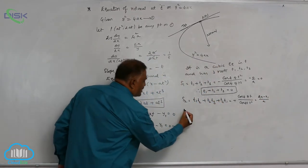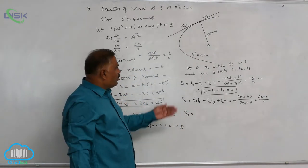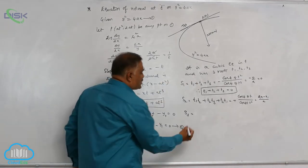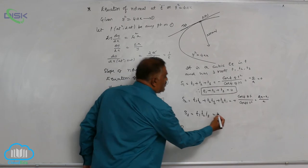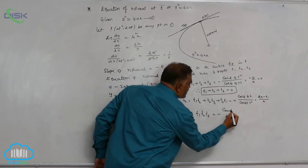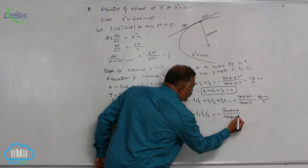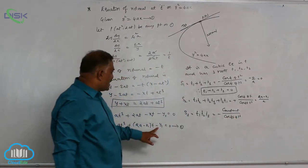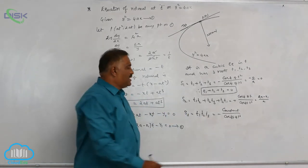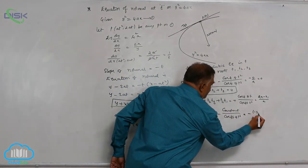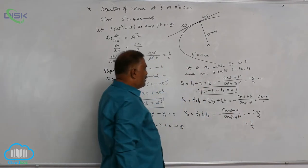Last but not the least, s3. Sum of the roots taken three at a time. Only three roots are there. So t1t2t3 is equal to minus constant term divided by coefficient of t cube. What is the constant term here? Minus y1. Of course minus is there. That is why it is minus of minus y1 by a. This is y1 by a.